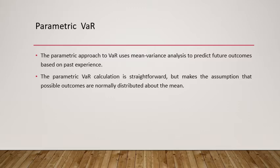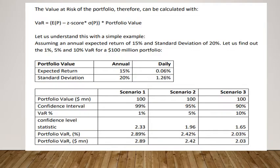The parametric VaR calculation is straightforward but makes the assumption that possible outcomes are normally distributed about the mean. This is based on the concept of normal distribution, and that is the basic assumption of parametric VaR. Let me take you to the NISM sheet where the concept of parametric VaR has been explained with the help of an example.